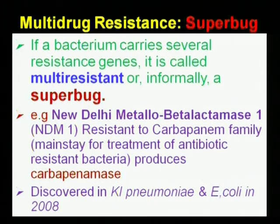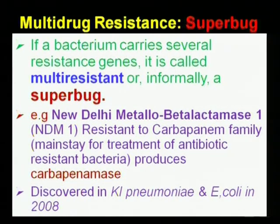Next comes multi-drug resistance. Multi-drug resistance means some organisms exhibit resistance towards more than one antibiotic. That means the routinely used antibiotics, most of them, do not have any effect. Such organisms are called superbugs — in the sense that they have an immense ability to resist almost all kinds of drugs.